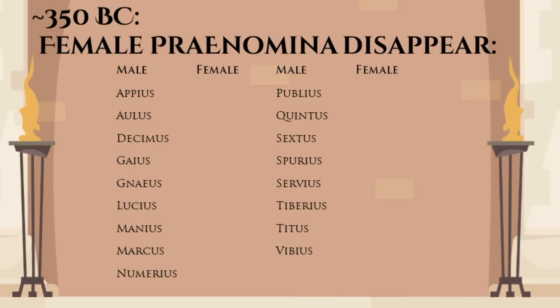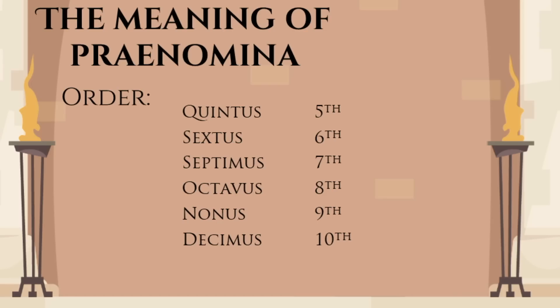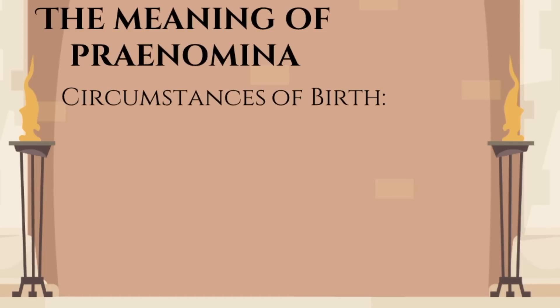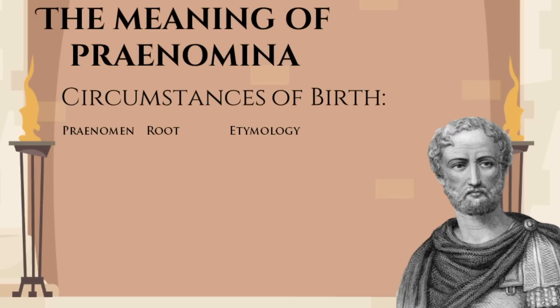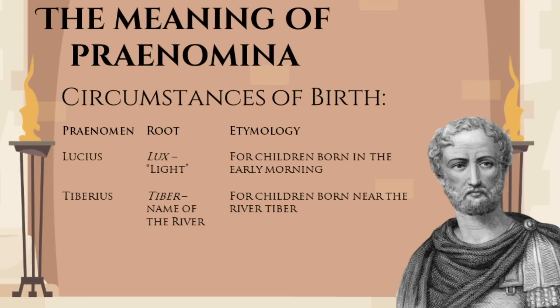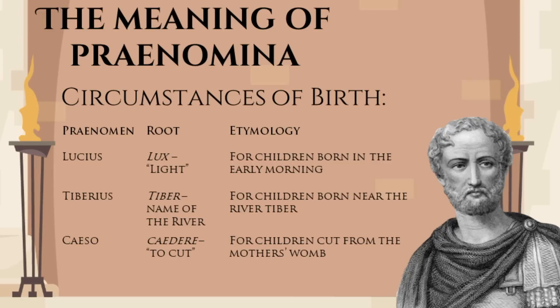All of the praenomina used to have some kind of original meaning. Some of these names are numerical, like Quintus or Sextus, meaning fifth and sixth. The name Postumus, which means last, also refers to order, even though it is often associated with children born after the father's death. Other praenomina have meanings related to the circumstances of birth. Pliny the Elder lists a lot of these etymologies, although it is unclear how many are actually true. For example, Lucius was the name for a child born at the first light, Tiberius for children born near the river Tiber, and Caeso for those who were cut from the mother's womb. All of these rules may have had some basis in tradition, but obviously weren't followed strictly.